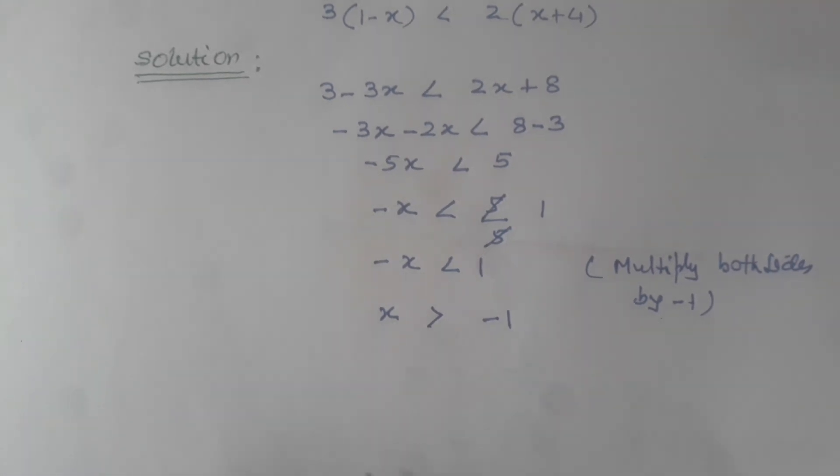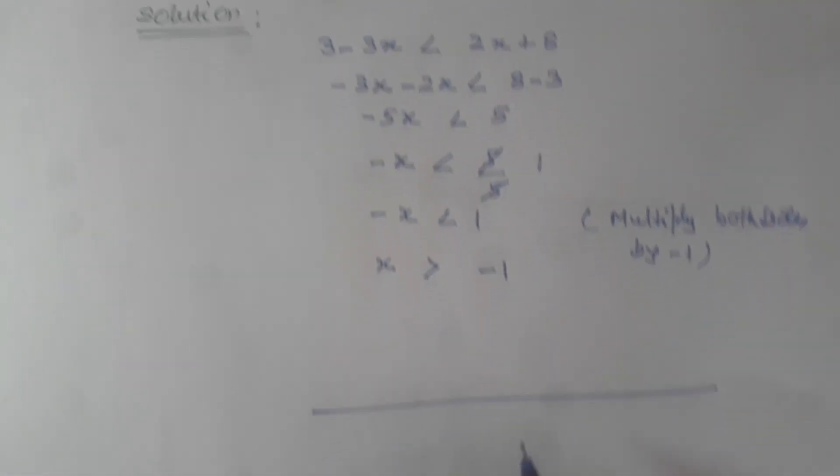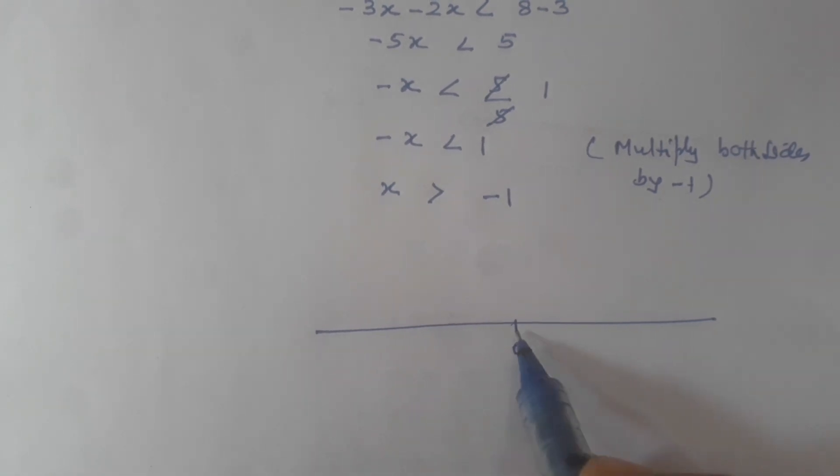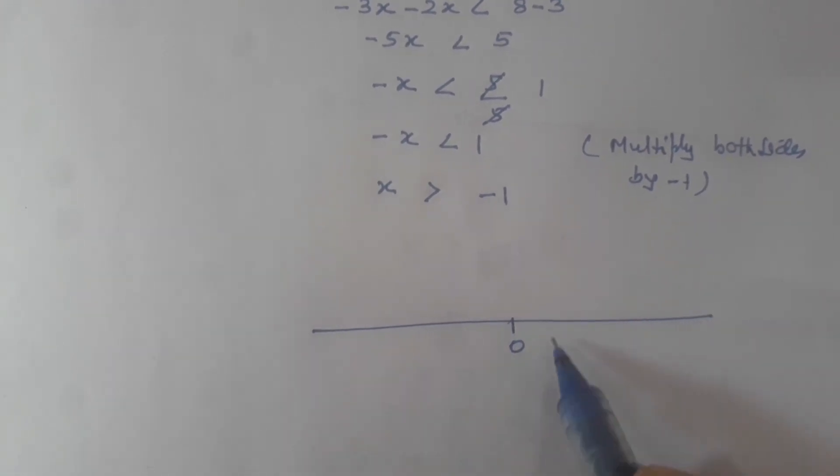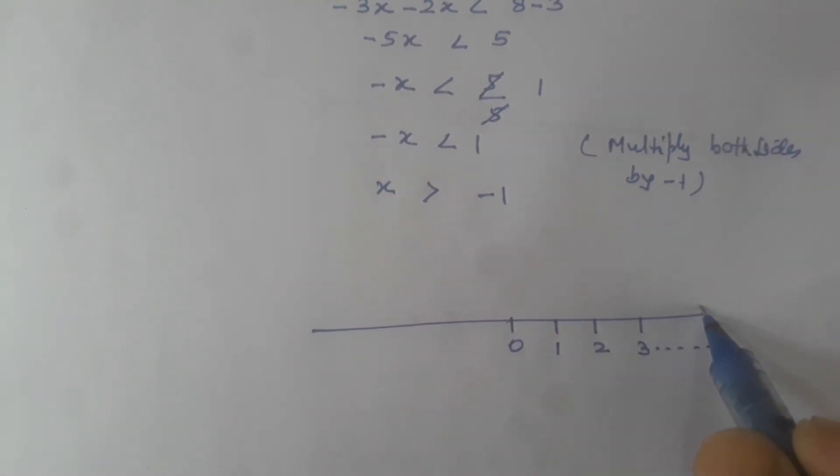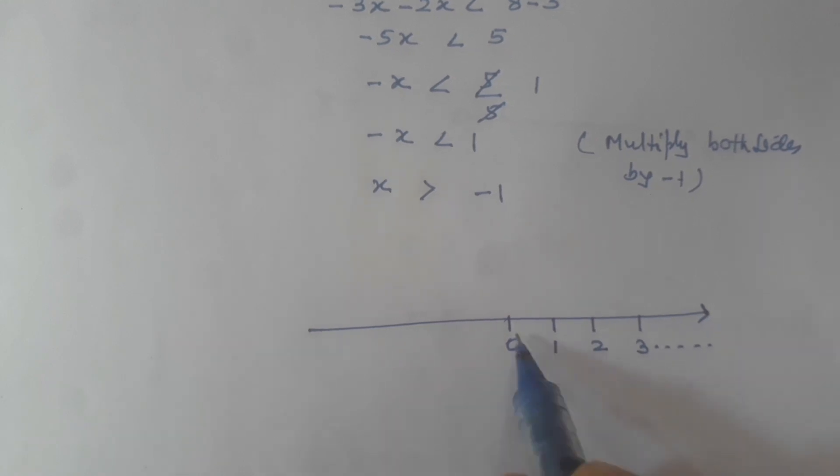This is our number line. Zero is here, and to the right are positive numbers: 1, 2, 3, and so on, with an arrow meaning it goes to infinity. To the left are minus 1, minus 2, minus 3, also going to infinity.